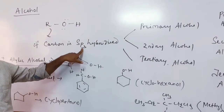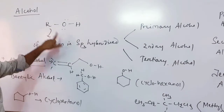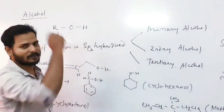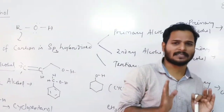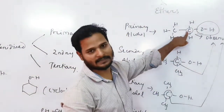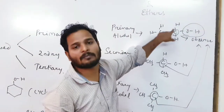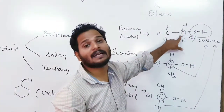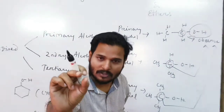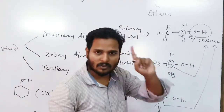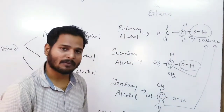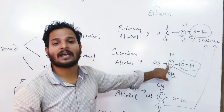All carbons in alcohol are sp3 hybridized — all are single bonds. We distinguish primary, secondary, and tertiary alcohols. Simply observe the carbon to which the functional group OH is attached — count how many other carbons are connected to that carbon. That determines whether the alcohol is primary, secondary, or tertiary.